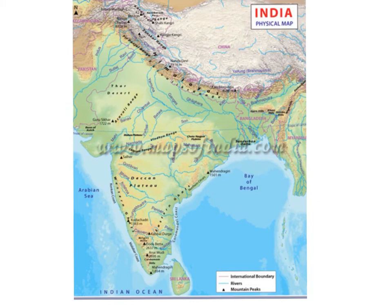Questions to think about through this section: One, how did the geography influence the history of India? Two, how did people live in one of the early cities in the Indus River Valley? Key terms you'll come across: subcontinent, monsoon, migrate, caste, and citadel.